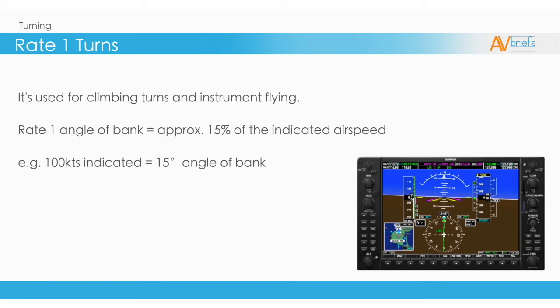On the analog instruments, a Rate 1 turn is usually indicated on a turn coordinator as shown here. When the airplane symbol's wings are on this line, the airplane will be achieving a Rate 1 turn. Be aware, this is the only thing it represents. It shows a rate of turn, it does not show bank angle.